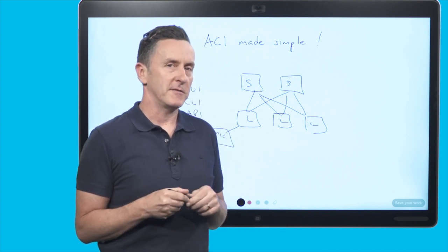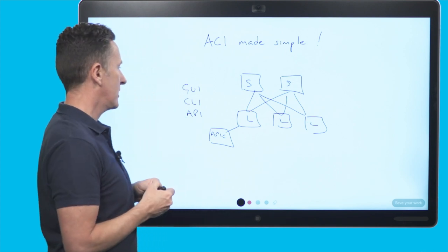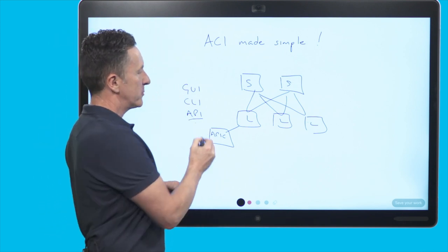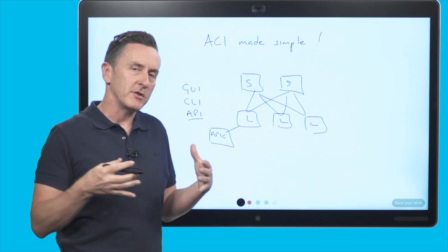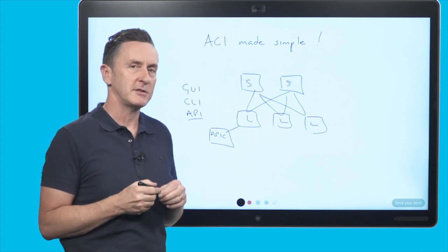From a config perspective though I tend to use the API. I like this method to push in configuration in bulk. So I can deliver lots of configuration into the network in a consistent manner.